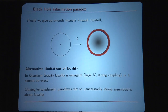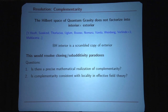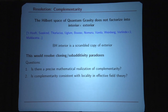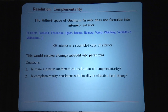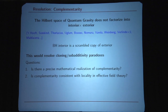This is an old idea — the idea of complementarity — which is the idea that the Hilbert space of quantum gravity cannot be factorized into an interior and exterior. In other words, the black hole interior is basically a scrambled copy of the exterior Hilbert space. This would immediately resolve the sub-additivity and cloning paradoxes because these theorems rely on the assumption that the Hilbert space is a tensor product. But then there are new questions: is there a precise mathematical formulation of complementarity, and can complementarity be consistent with locality in effective theory?